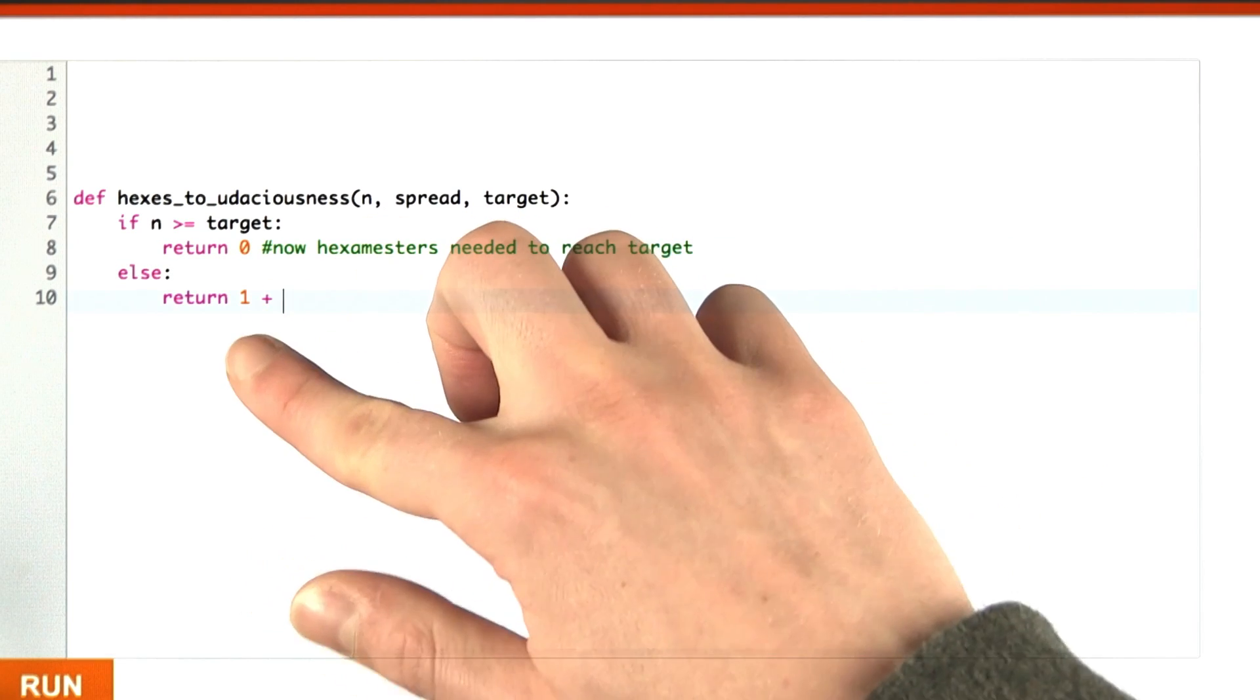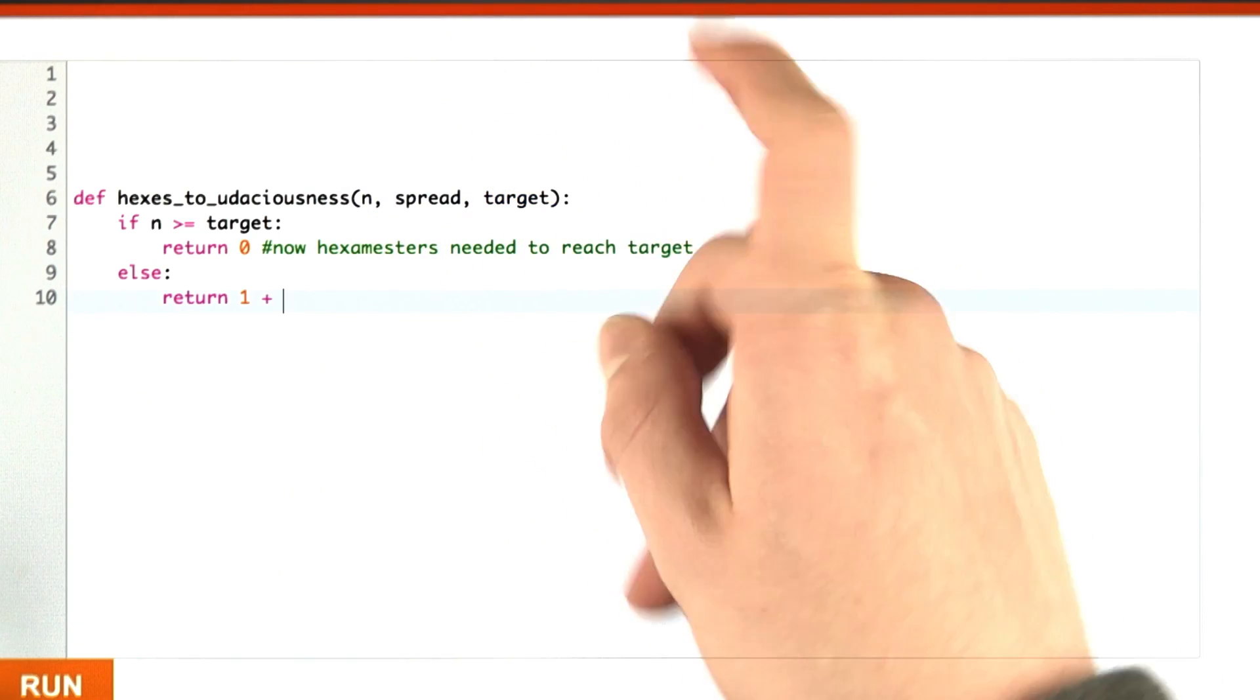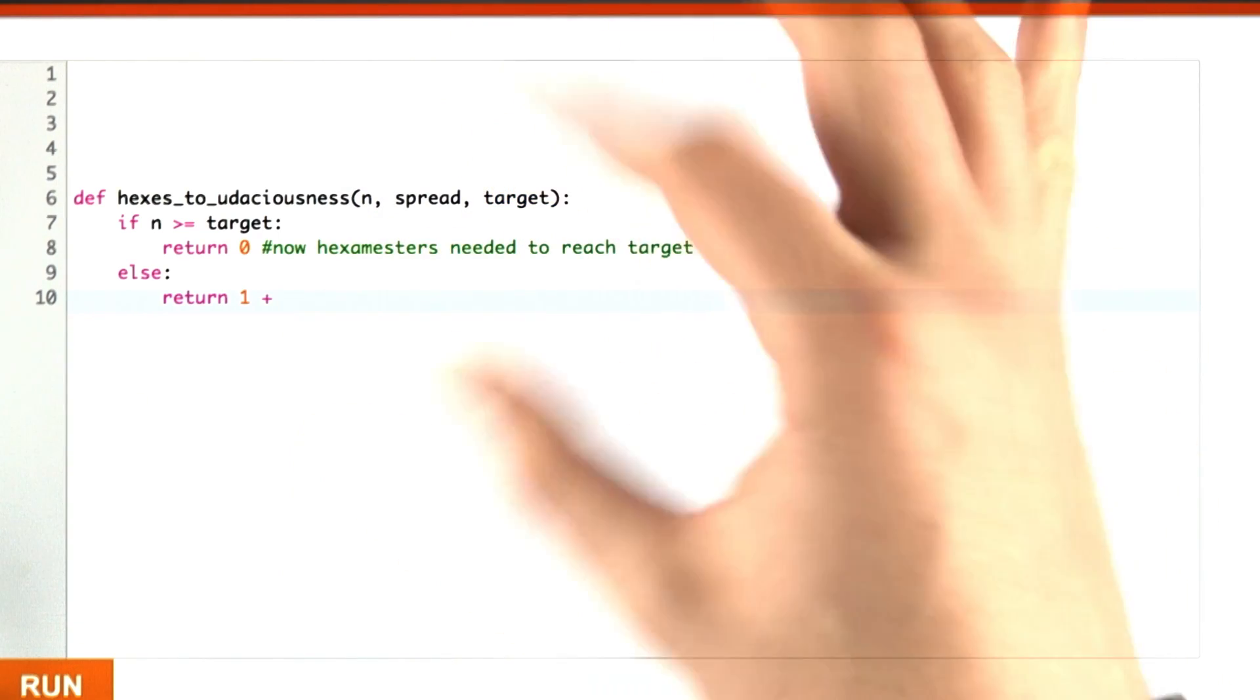Now here, I have a plus one because we're going to say that we're doing one iteration of the Udacian spreading process. Now for the recursive call.